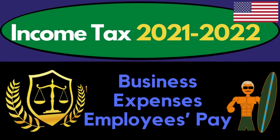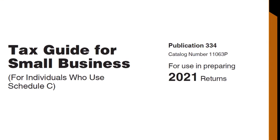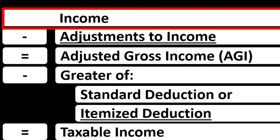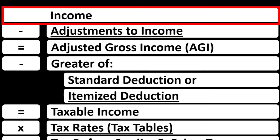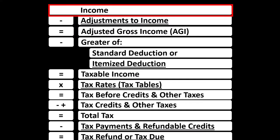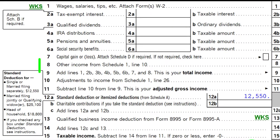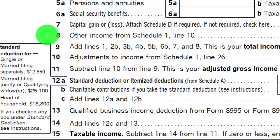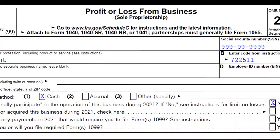Welcome to income tax 2021-2022 business expenses — employees pay. Get ready to maximize your refunds. Most of this information can be found in Publication 334, Tax Guide for Small Business, tax year 2021. We're looking at the income tax formula: line one income, which has a sub-schedule — basically an income statement of income and expenses. Focusing on expenses as deductions, the net rolls into line one income of the tax return. On the Schedule C, the bottom line rolls into Schedule 1, which rolls into page one of Form 1040, line eight.